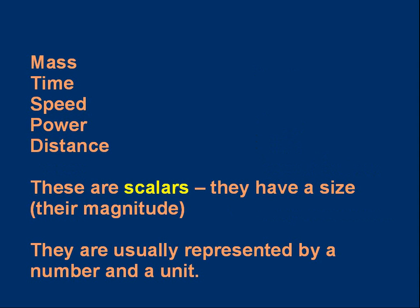Well, let me tell you if you didn't spot it or don't know. The list on the left had mass, time, speed, power, distance. Now these are all scalars. They all have a size which we refer to as the magnitude. For example, a mass could be 50 kilograms. We would say the magnitude of the mass is 50 kilograms.